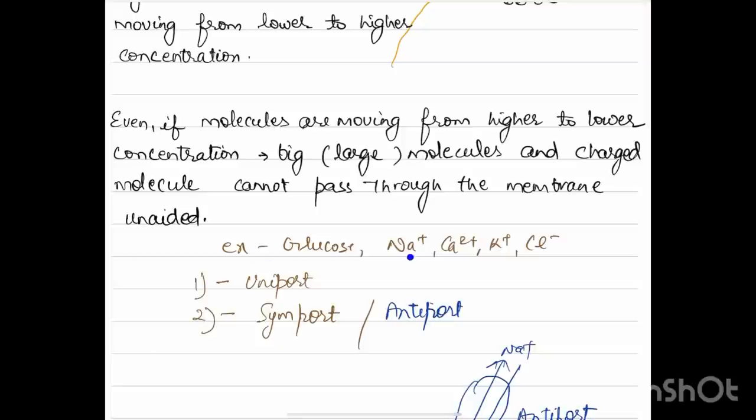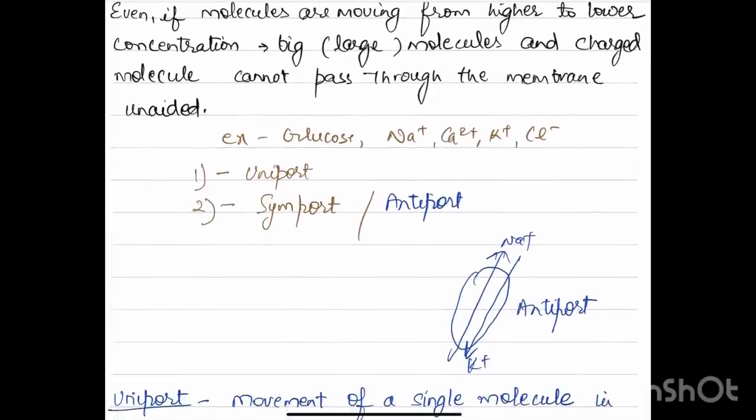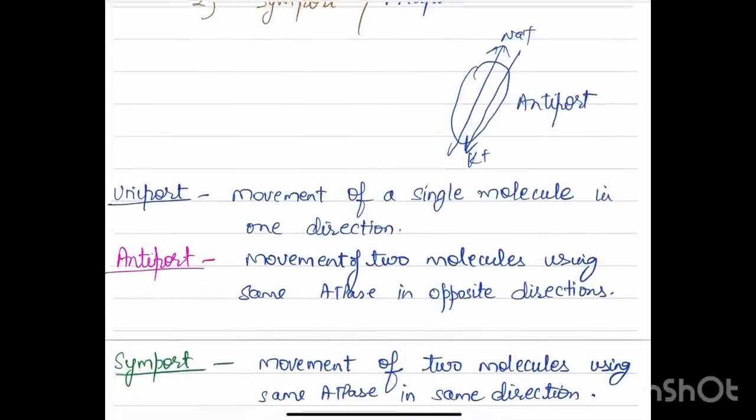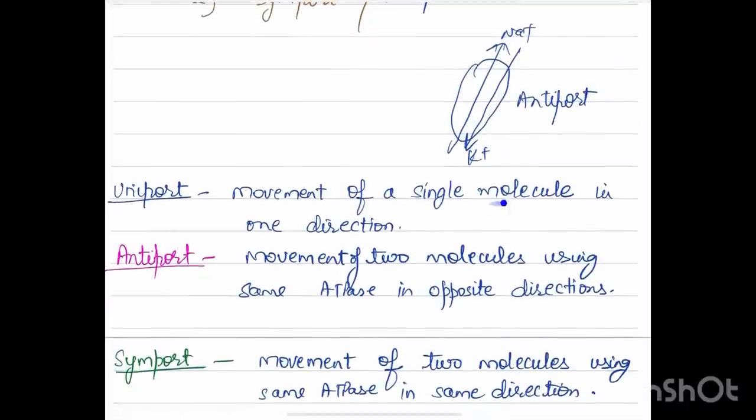For example, glucose, sodium, calcium, potassium, chlorine are charged and large molecules. On the basis of transport, they are classified as uniport, symport, or antiport. Uniport means movement of a single molecule in one direction when a single molecule moves across the membrane.